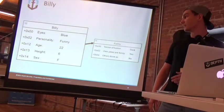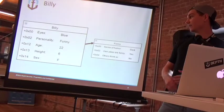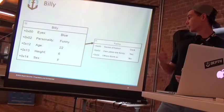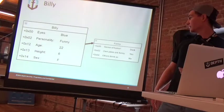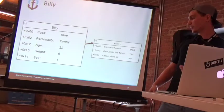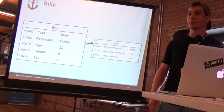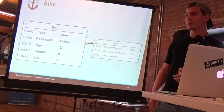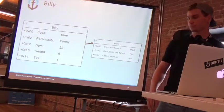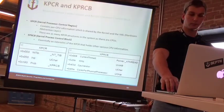We're using Billy for instance. Billy has blue eyes. His personality is funny — that points to an alternative structure which is his funny personality. His sense of humor is dark. He thinks his own jokes are funny. Do other people think so? No, they don't. So feel bad for Billy for a second. He's 22 years old and he's six foot tall.